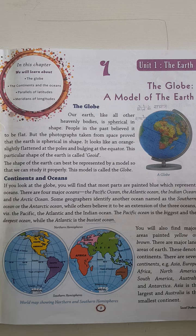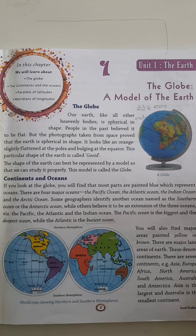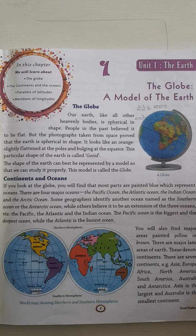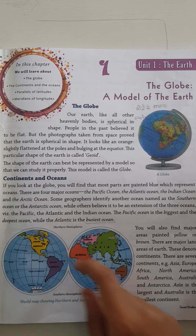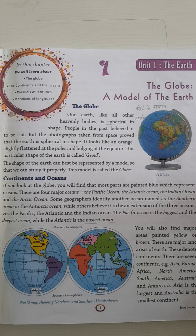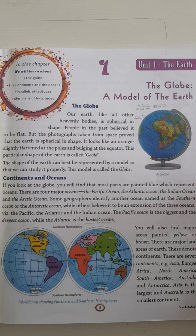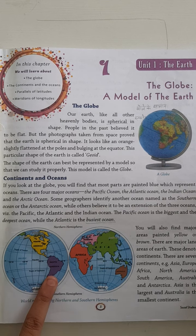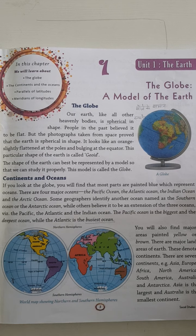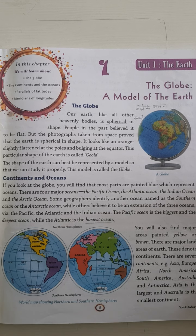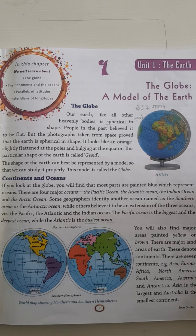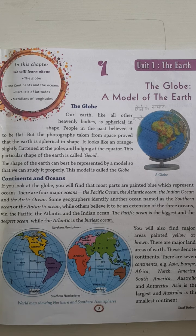Now the next topic is continents and oceans. If you look at the globe, you will find that most parts are painted blue, which represent oceans. There are four main oceans: the Atlantic Ocean, the Pacific Ocean, the Indian Ocean, and the Arctic Ocean.